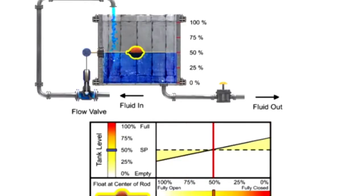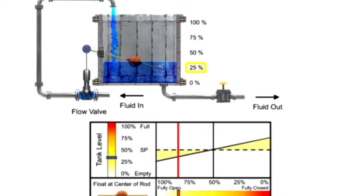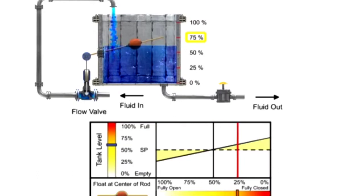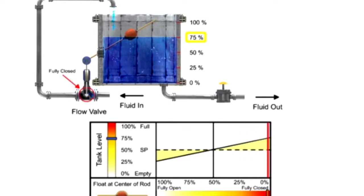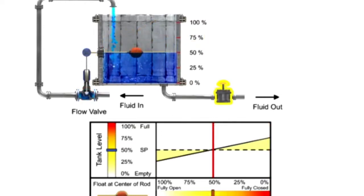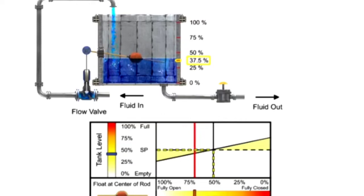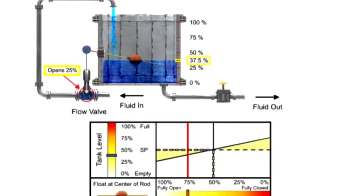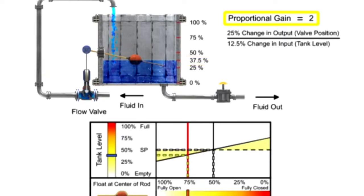Positioning the float to the midpoint of the bar increases the gain. The valve fully opens when the level drops to 25% and fully closes when the level rises to 75%. Opening the drain valve causes the tank level to drop by 12.5%, or to 37.5% full. The float drops and the valve opens 25%, demonstrating a gain of 2, since the 12.5% change of tank level resulted in a 25% change of valve position.